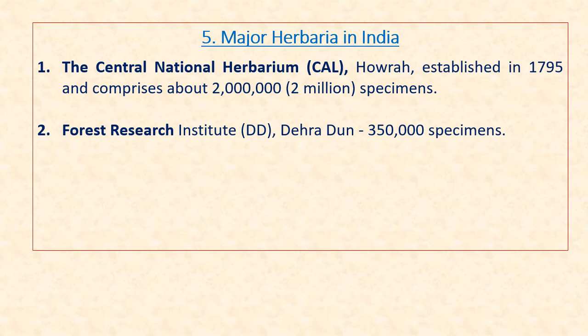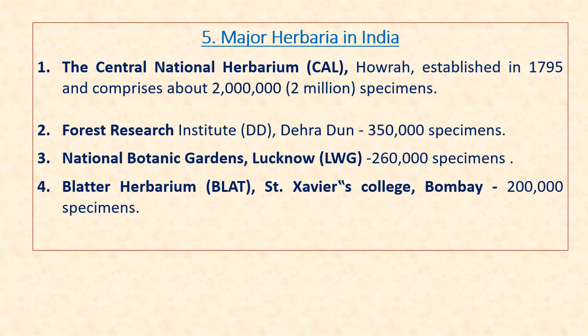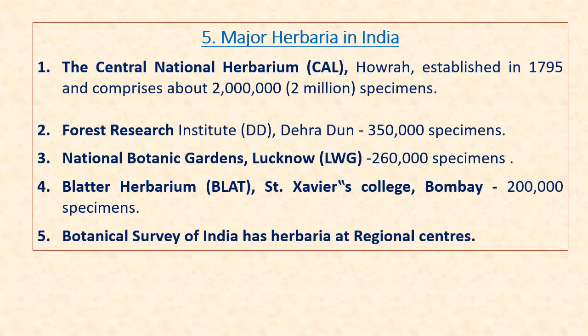Some of the major herbaria in India: the Central National Herbarium, Howrah, was established in 1795 and comprises about 2 million specimens — it is the first herbarium in the country and one of the most important Asian herbaria. The Forest Research Institute, Dehradun, has about 3,50,000 specimens. The National Botanical Garden, Lucknow, has 2,60,000 specimens. The Blatter Herbarium, Bombay, has 2,00,000 specimens. The Botanical Survey of India has many regional centers maintaining herbaria in different parts of India.